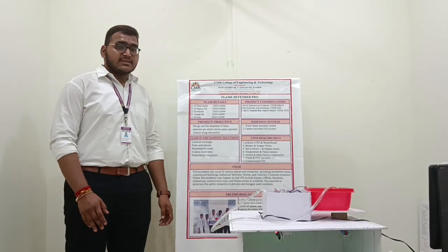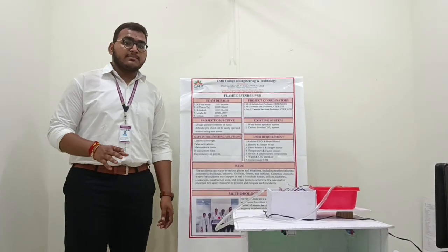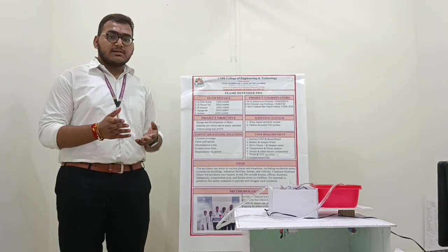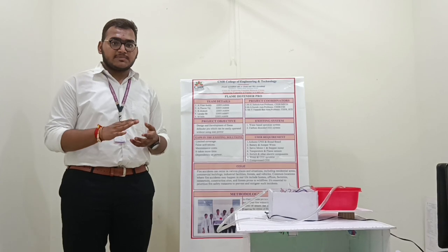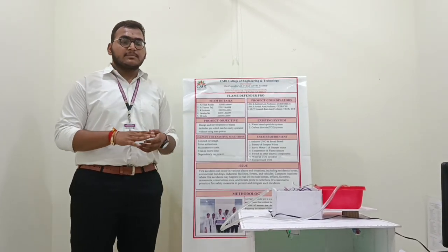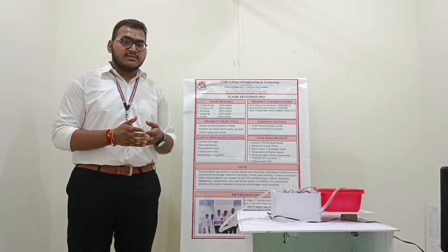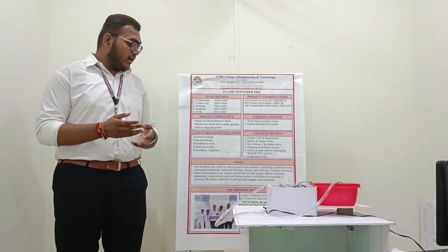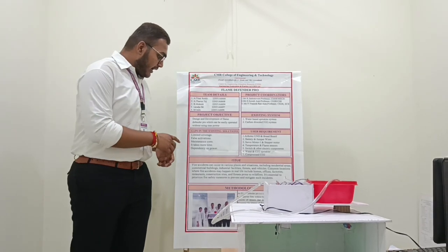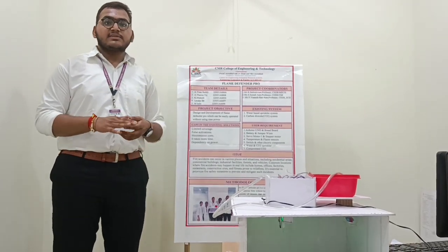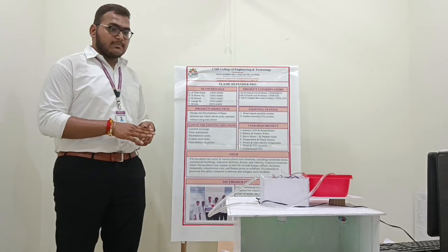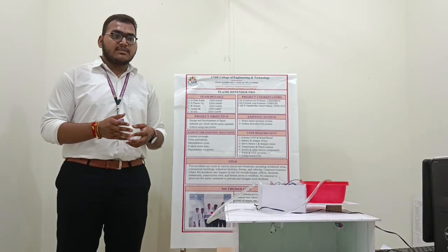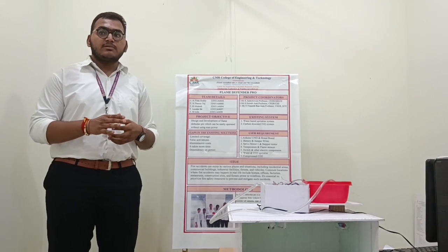Coming to gaps in the existing solutions: first, limited coverage — if the flame occurs beyond the limit, the sprinkler cannot reach that specific position. Second, false activations — in summer seasons there is a chance of high temperature, and due to this, false activations may occur in the sprinkler. Third, maintenance cost — this requires high maintenance and takes more time. In case of a high range of flame or fire, the sprinkler takes more time to decrease the fire.